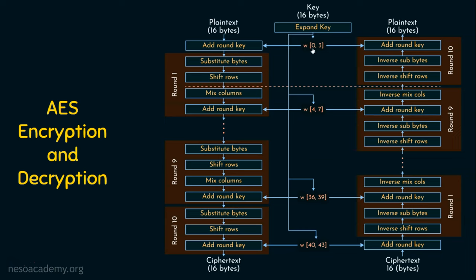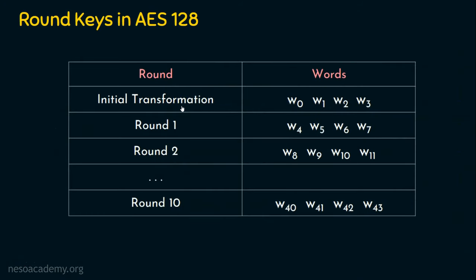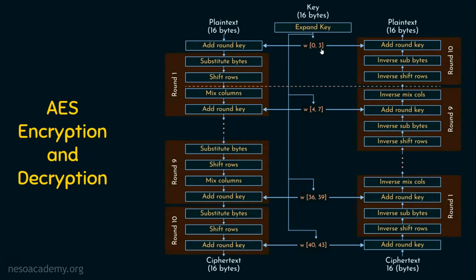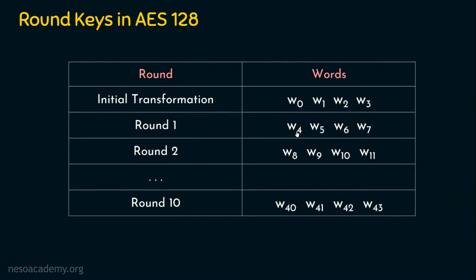The round key size is fixed at 128 bits for all AES variants. The initial transformation uses W0, W1, W2, and W3. Round 1 uses W4 to W7. Round 2 uses W8 to W11. The last round in AES-128 uses W40 to W43. Before going into key scheduling, let's see what happens in a single round.